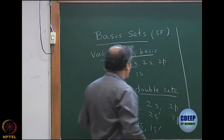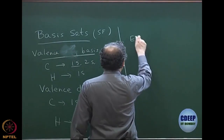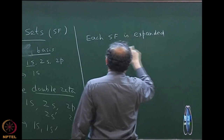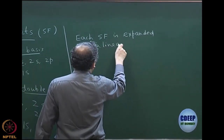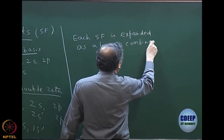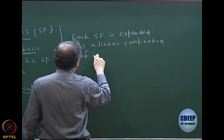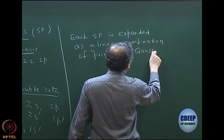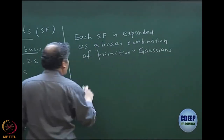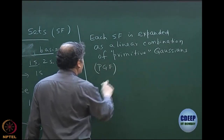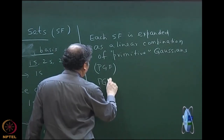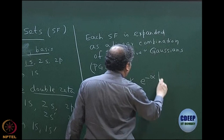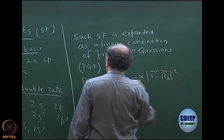However, we do not use any Slater orbitals directly. Each Slater function is expanded as a linear combination of Gaussian functions, and we call these primitive Gaussians (PGF). A primitive Gaussian for S-type is typically some constant K times e to the minus alpha times |r − r_A|².